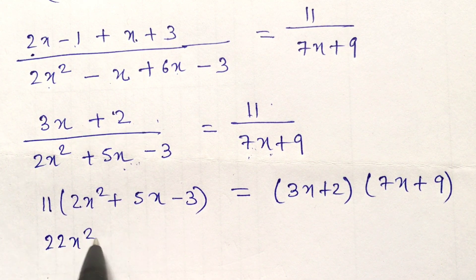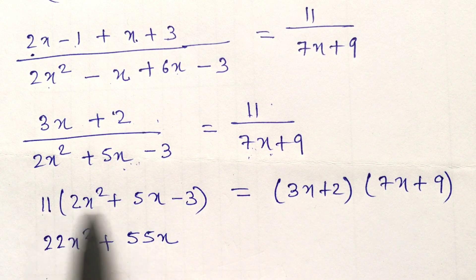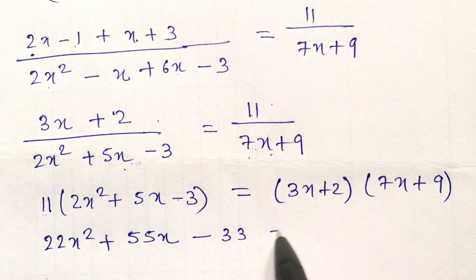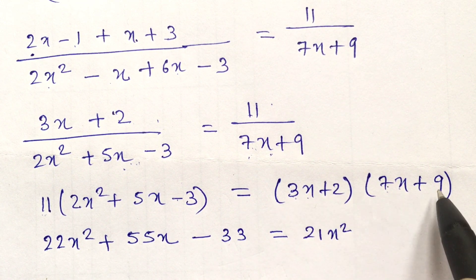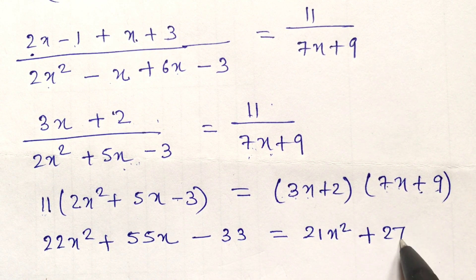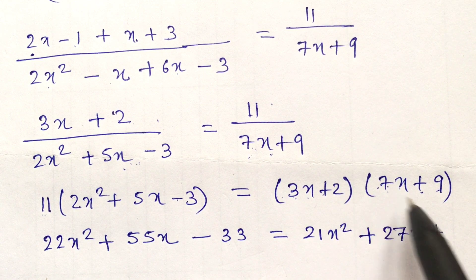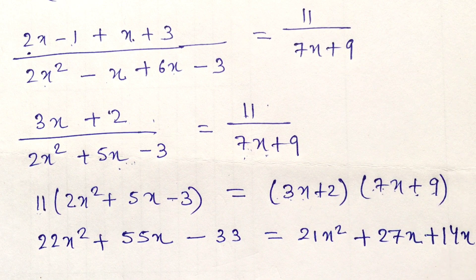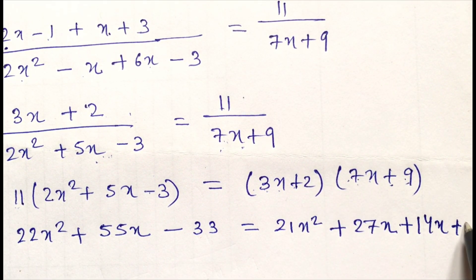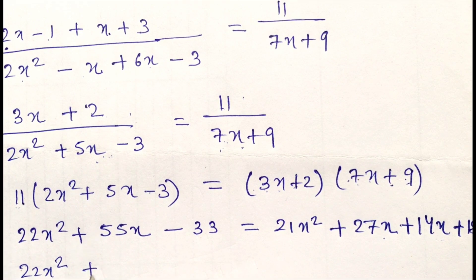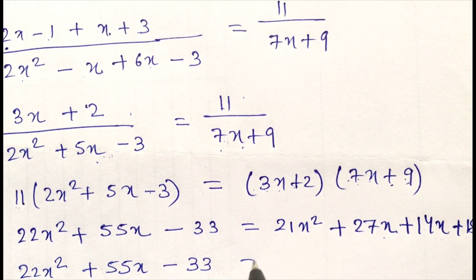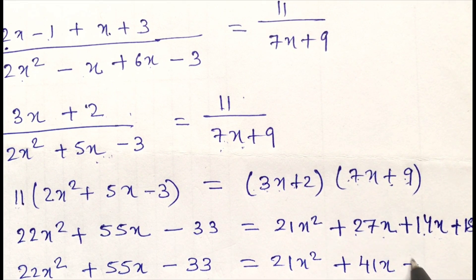Now multiply: 11 × 2x² = 22x², 11 × 5x = 55x, 11 × (-3) = -33. On the right hand side: 3x × 7x = 21x², 3x × 9 = 27x, 2 × 7x = 14x, 2 × 9 = 18. Collecting like terms on the right hand side: 21x² + (27+14)x + 18 = 21x² + 41x + 18. So we have 22x² + 55x - 33 = 21x² + 41x + 18.